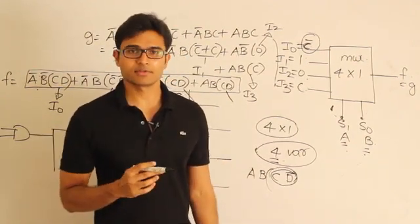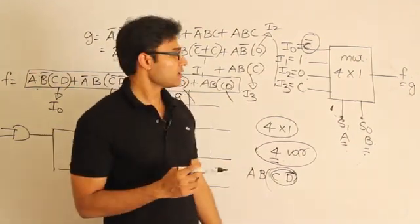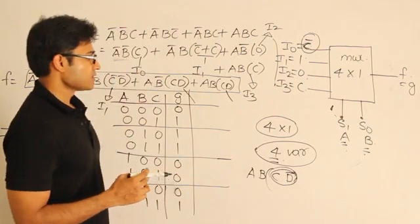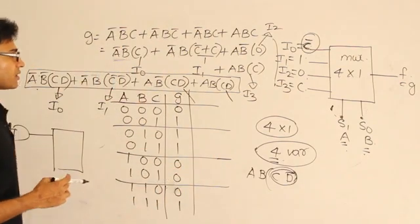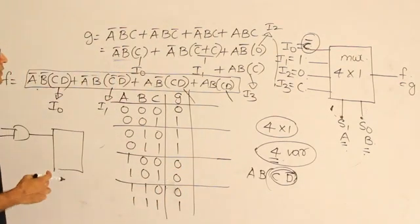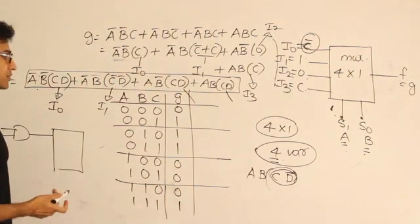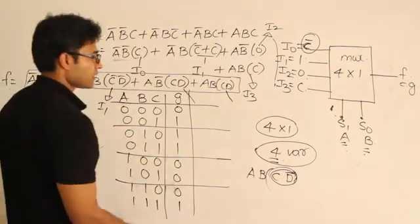Definitely, implementing higher-variable functions is possible using a smaller multiplexer, but you need additional gates. As long as you are allowed to use extra gates, you can implement any larger function. Let's now look at some problems on this to get a clearer idea.